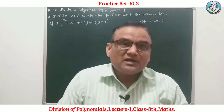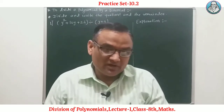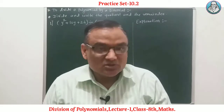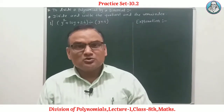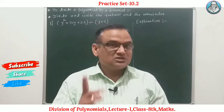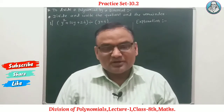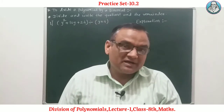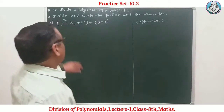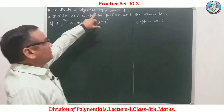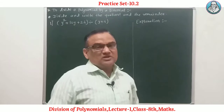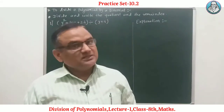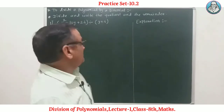We have to divide a polynomial by a binomial. A polynomial has three or more terms, while a binomial has exactly two terms. In Practice Set 10.2, the question says: divide and write the quotient and the remainder. After dividing, we write the remainder and quotient.